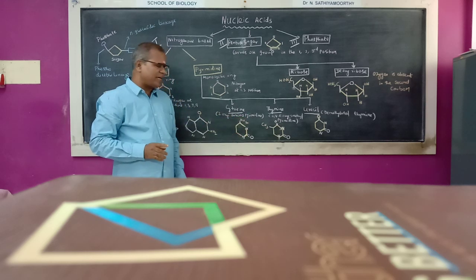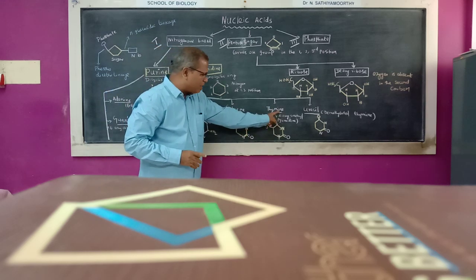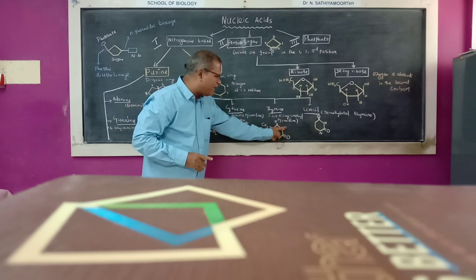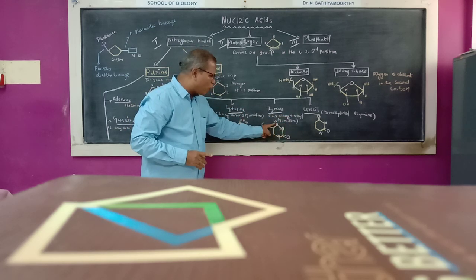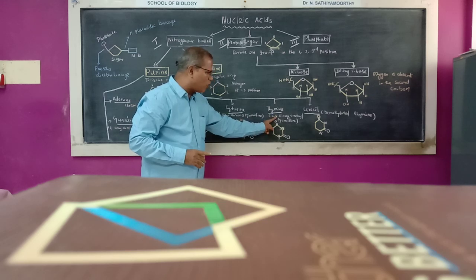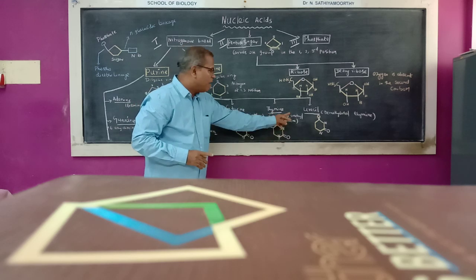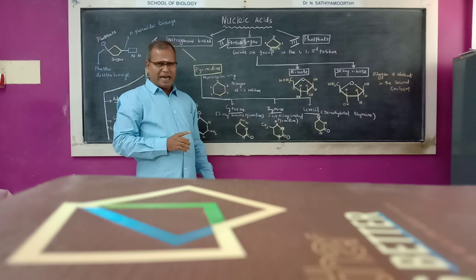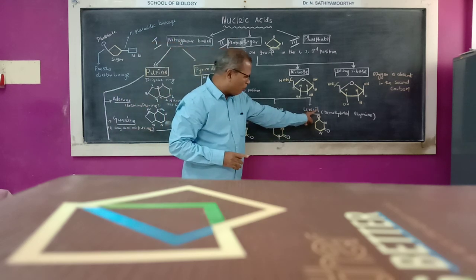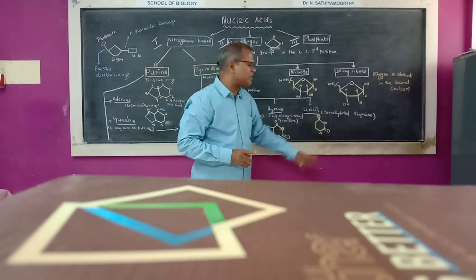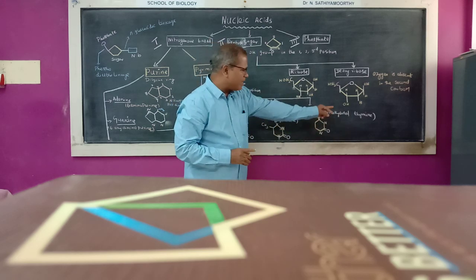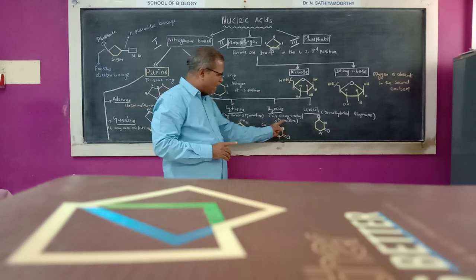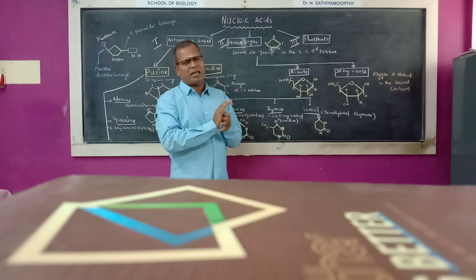Thymine is 2,4-dioxy-5-methylpyrimidine, with oxygen at the 2nd and 4th positions and a methyl group at the 5th position. Uracil is a demethylated form of thymine — it lacks the methyl group present in thymine.